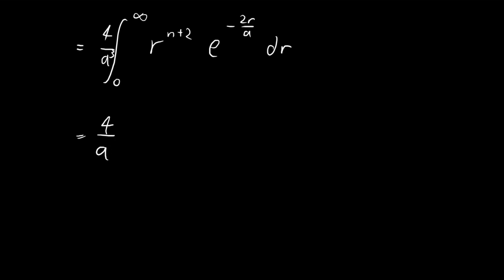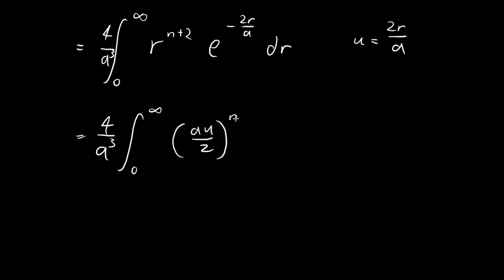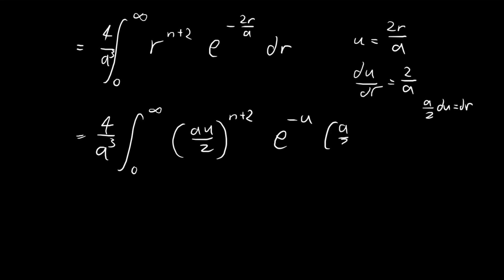Next I'm going to do a substitution. Let u = 2r/a. Under this substitution, when r=0, u=0, and when r=∞, u=∞. The term r to the power of n+2 becomes (au/2) to the power of n+2. The exponential becomes e to the power of negative u. Differentiating both sides gives a/2 · du = dr, so we replace dr with a/2 · du.